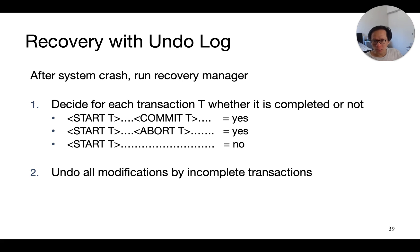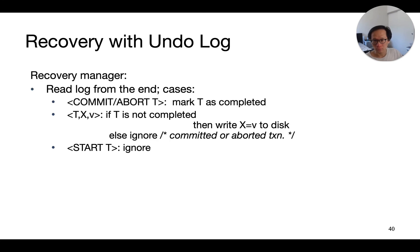Let's see how we recover using an undo log. When the system crashes, we run the recovery manager and scan the log from the end to determine whether each transaction is completed or not. If we see both a commit and a start record, or a start and abort record, the transaction is complete. For those with only a start record, they are incomplete and need to be undone. When reading the log from the end, there are three cases to consider.